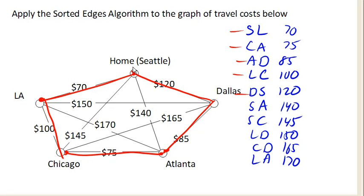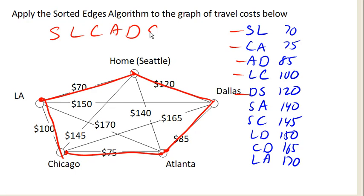Okay, we got really lucky — we're done at this point, and we have our circuit: Seattle, LA, Chicago, Atlanta, Dallas, and back home to Seattle. That's what we get from the sorted edges algorithm here. And this one does turn out to be the optimal circuit. We also happened to find this using Nearest Neighbor.